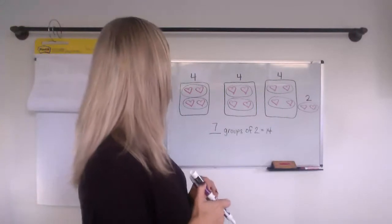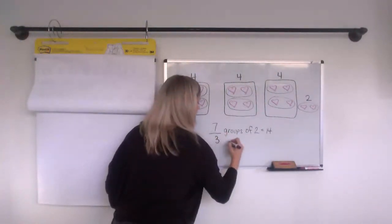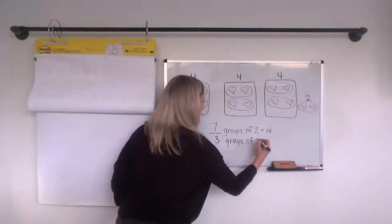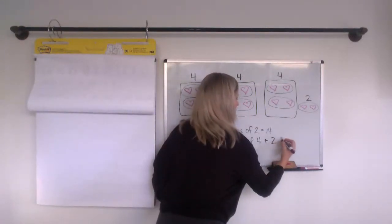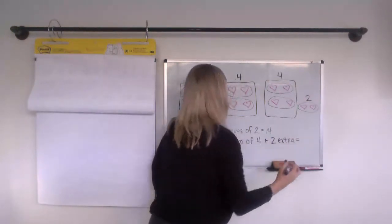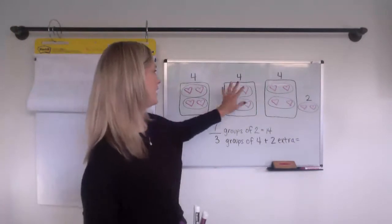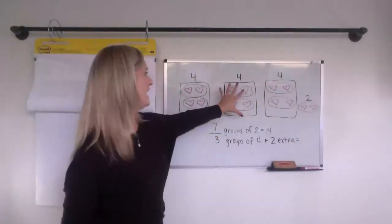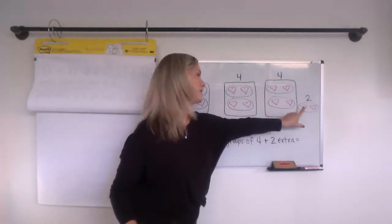So maybe you did three, one, two, three, three groups of four plus these two plus two extras. Maybe that's how you saw it. So three groups of four, four, four, eight, twelve. Count it with me. Ready? Four, eight, twelve. And then we have to add those two. Twelve, thirteen, fourteen.